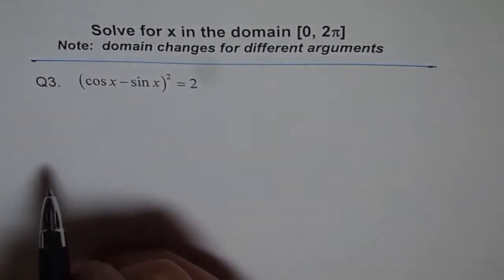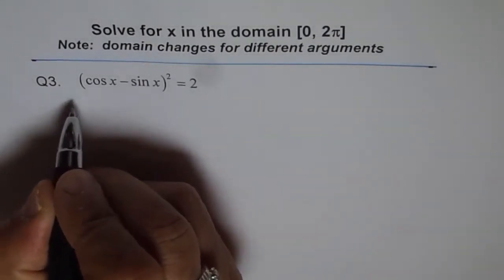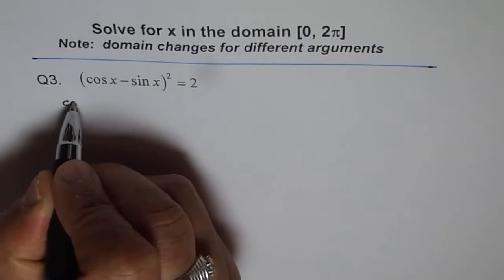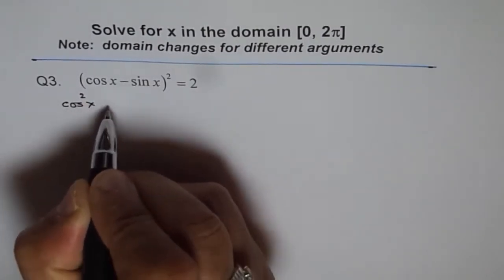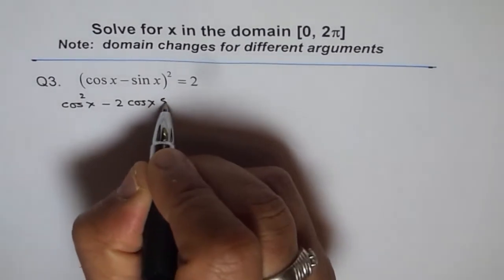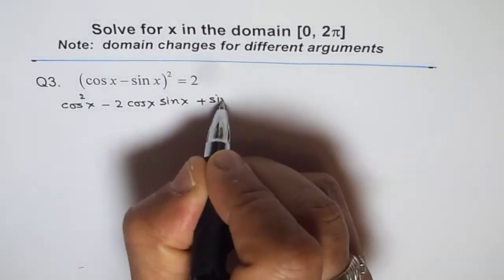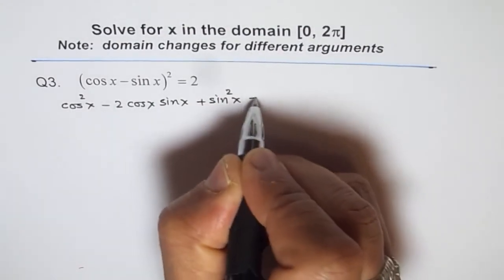Question 3 is (cos x - sin x)² = 2. The best way to solve is to expand the left side and then see what we get. If we expand the left side, we get cos²x - 2cos x sin x + sin²x = 2.